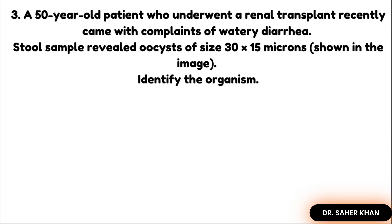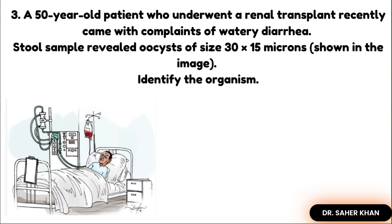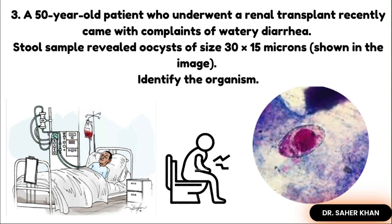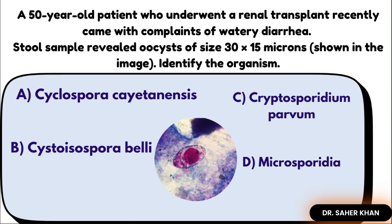Our next question: A 50-year-old renal transplant patient presents with watery diarrhea. Stool sample examination reveals oocysts of size 30 × 15 microns. What is the most likely organism? The options are cyclospora, cystoisospora, cryptosporidium, and microsporidia. An image is also given in the question.